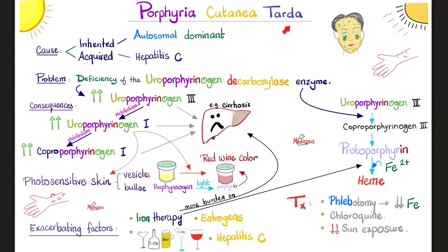Porphyria cutanea tarda. Why tarda? Because it can happen later in life — I could lead a normal life until my 50s, where I discover that I have hepatitis C, and then, thanks to the hepatitis C, I acquire porphyria cutanea tarda. It was tardy to the party. Why cutanea? Because it affects my skin — it makes my skin photosensitive.